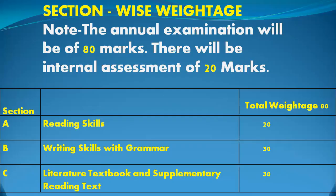Let's start now with the section-wise weightage. First of all, it must be clear to you all that the paper will be of 80 marks. And there will be internal assessment for 20 marks. Means your exam for 3 hours is 80 marks; 20 marks will be internal assessment which we always take through ASL — listening and speaking skill. Now section-wise: Reading section is 20 marks, Writing section and Grammar is 30 marks, and Literature will be 30 marks. Total marks will be 80, and 20 marks will be for internal assessment.